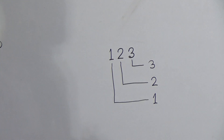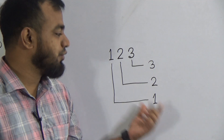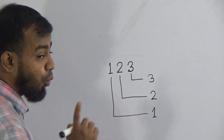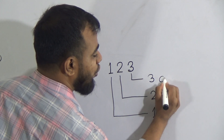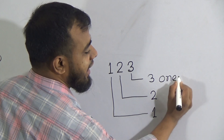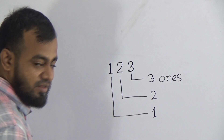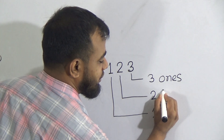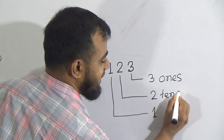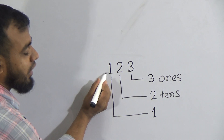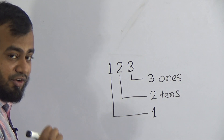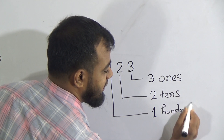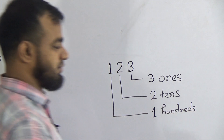After drawing the lines and writing the digits, we write down the place value names. Three is in the ones place — write 'ones' (O-N-E-S). Two is in the tens place — write 'tens' (T-E-N-S). One is in the hundreds place — write 'hundreds' (H-U-N-D-R-E-D-S).